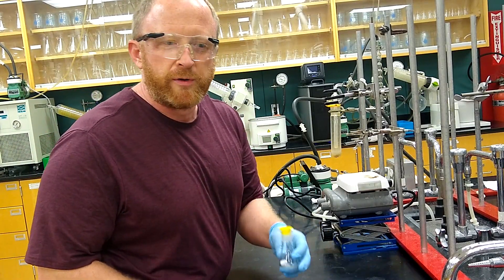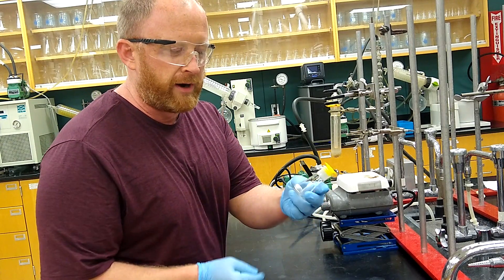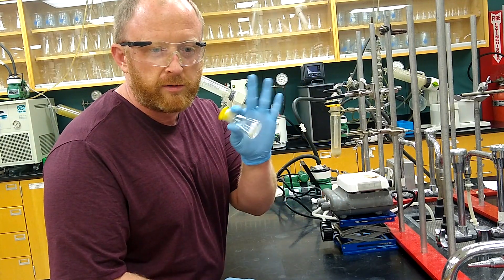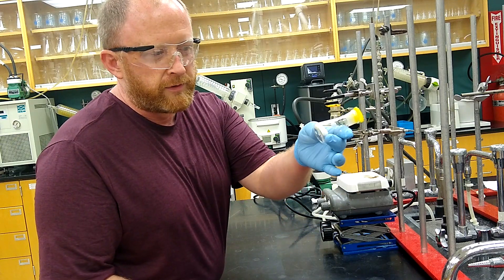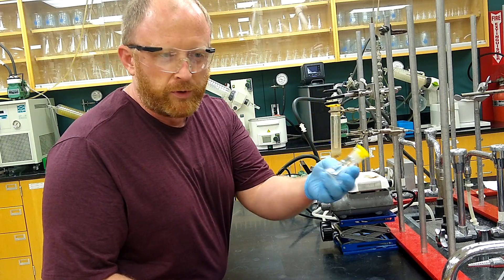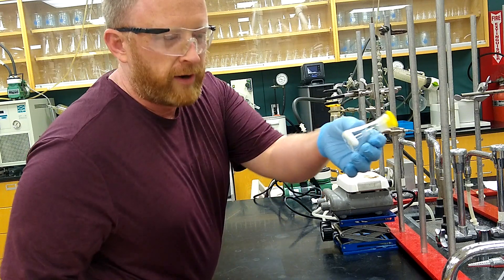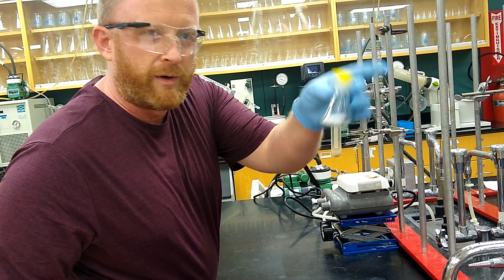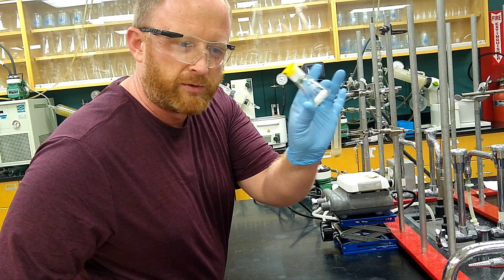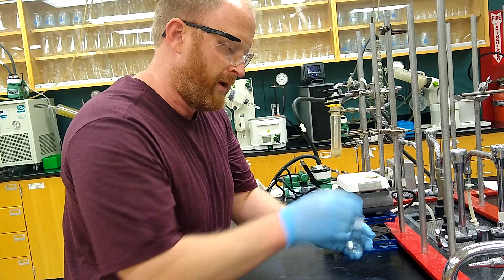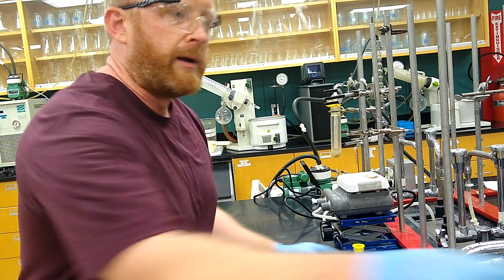The first thing we want to do for the procedure is measure out our cresol, p-cresol. It's a solid at room temperature but has a really low melting point, so I just heated it up and transferred it over by pipette. I've got cresol in a 25 mL conical flask with a stir bar.